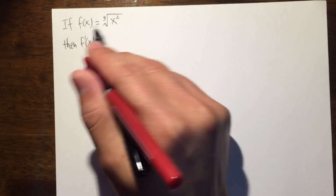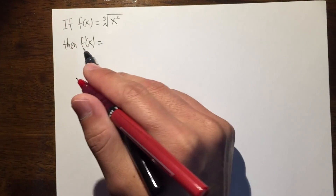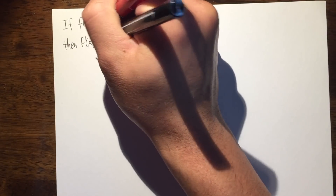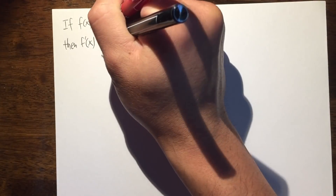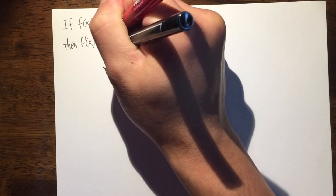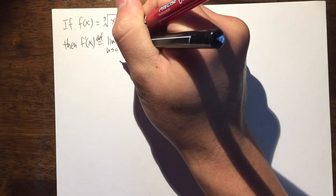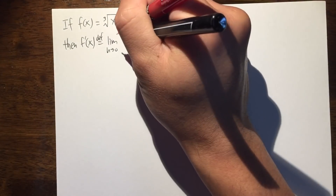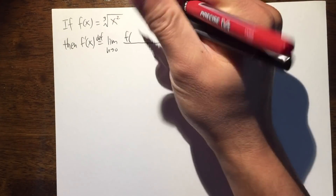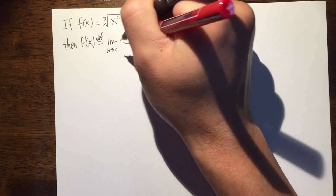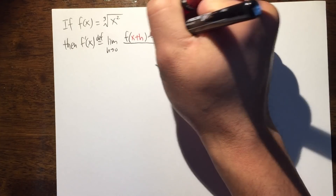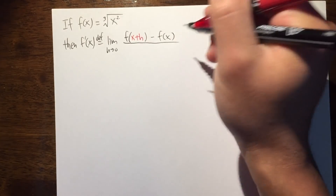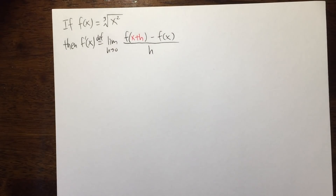We know that if this is the function, then f' is by definition the limit as h goes to 0, and then we have a difference quotient right here. On the top is f of x plus h, and then minus f of x, and on the bottom, we have that innocent h.